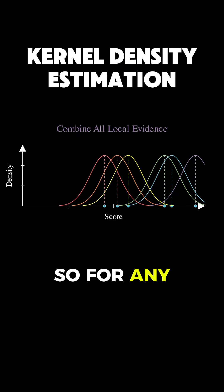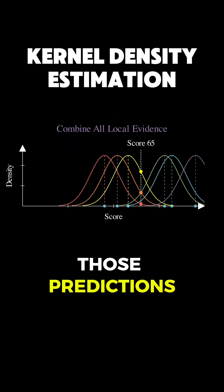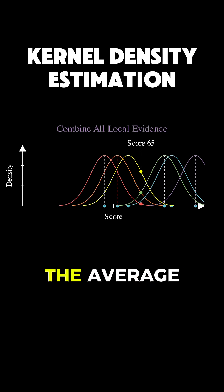So, for any score we are curious about, let's say 65 points, we examine what each of our 6 bell curves predicts for that score, add up all those predictions, and divide by 6 to get the average.